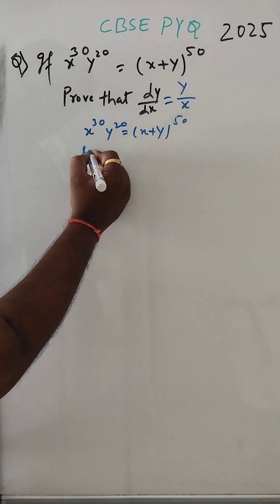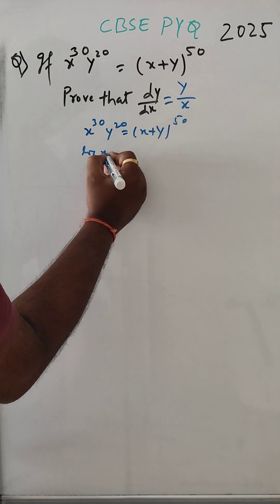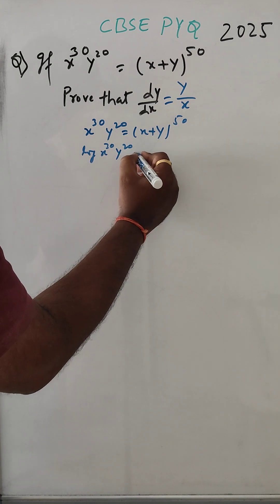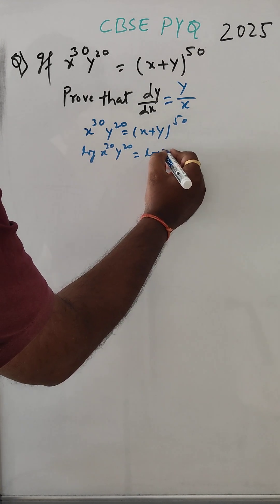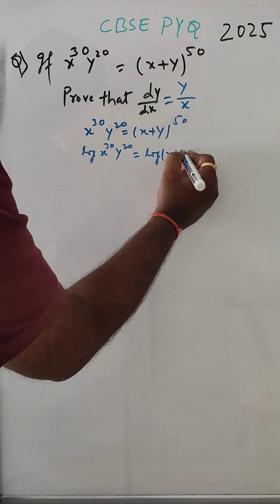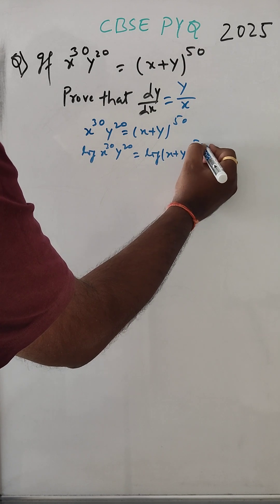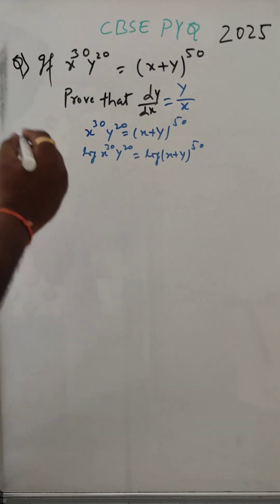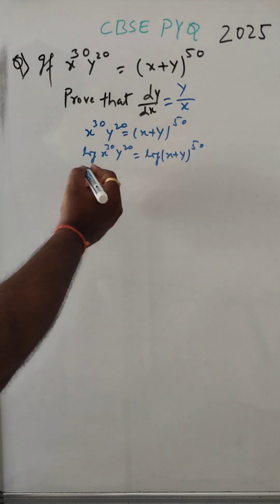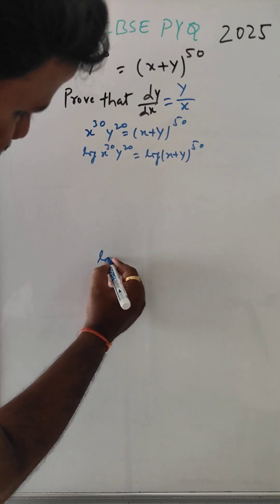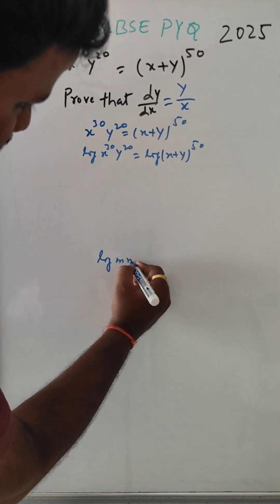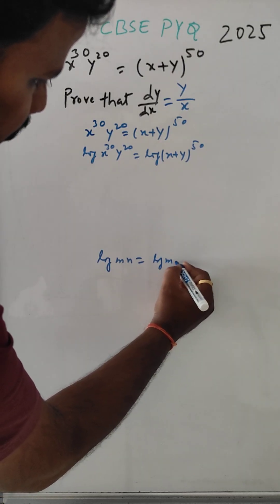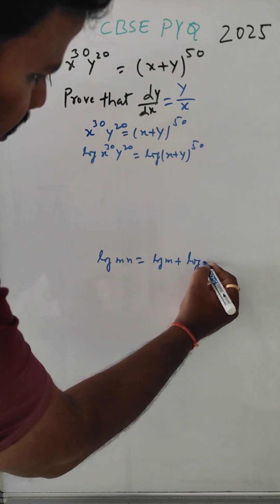Take log both sides. So, log of x to the power 30 times y to the power 20 is equal to log of x plus y to the power 50. We know that log of m into n is equal to log m plus log n.